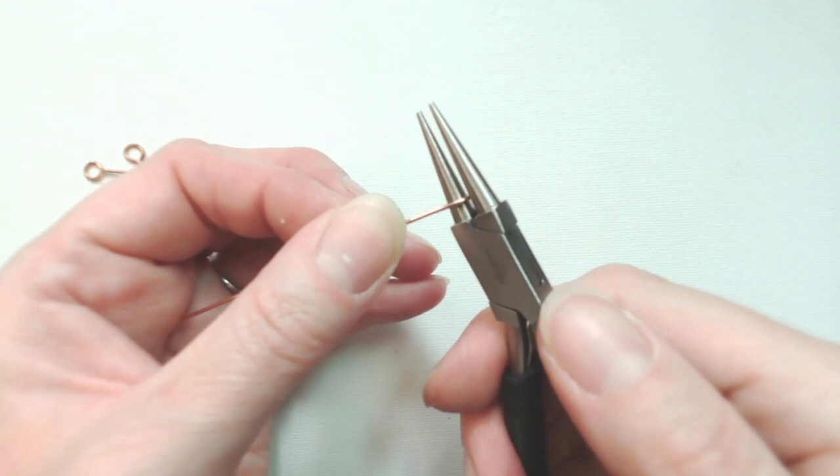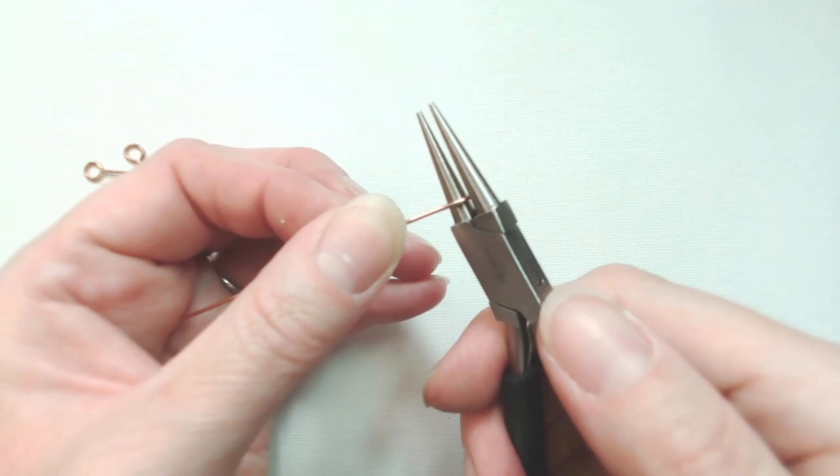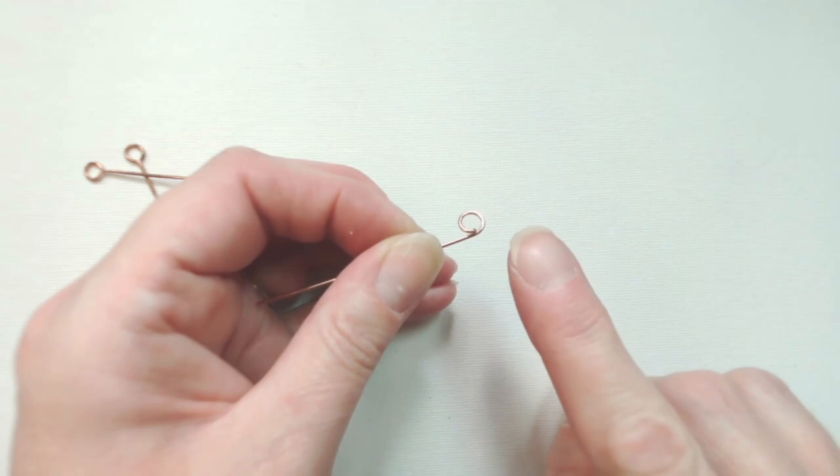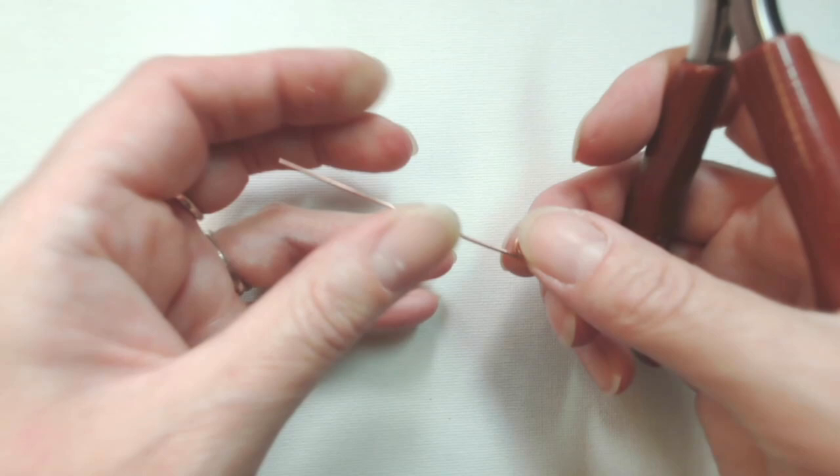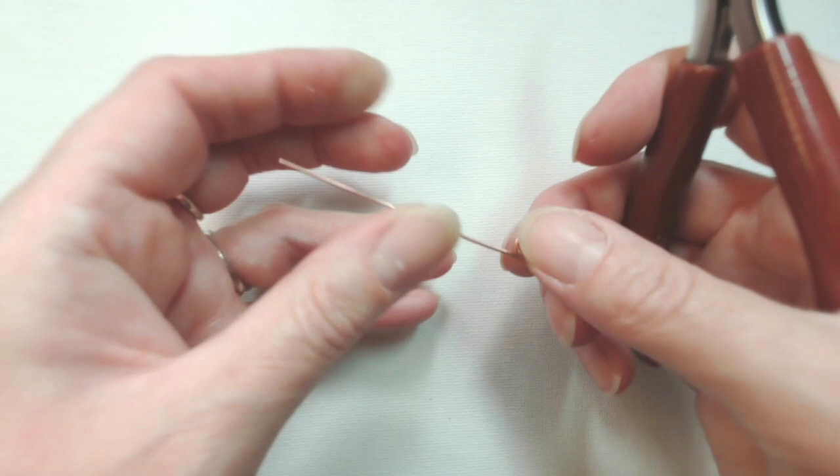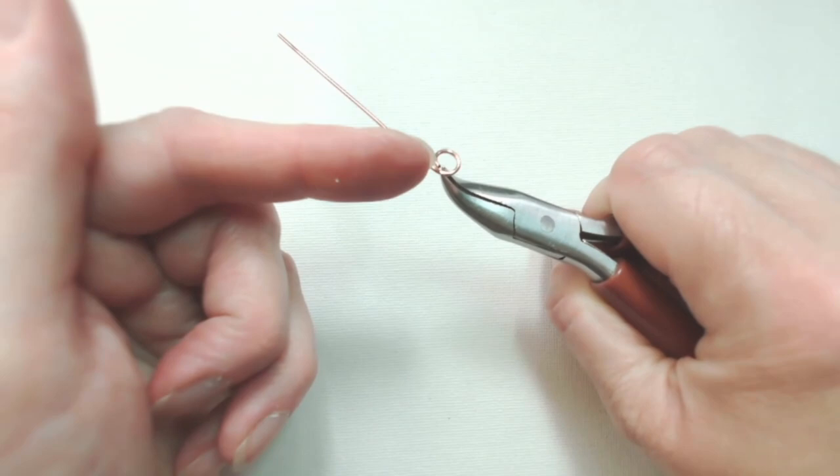I would then switch out to using my chain nose pliers. Any flat facing pliers with a reasonably fine tip will work. I'm going to grip that circle shaped wire just at the point which the cut end intersects with that circular form.